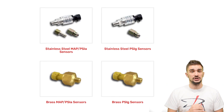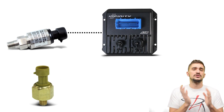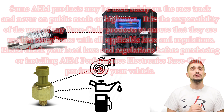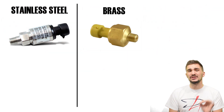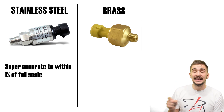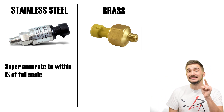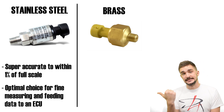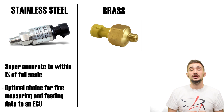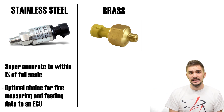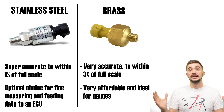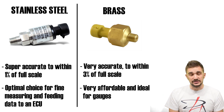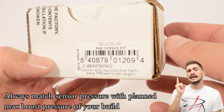AEM has a broad range of sensors for measuring manifold absolute pressure and feeding data to your ECU, as well as gauge sensors for measuring boost pressure, oil pressure, and fuel pressure. AEM's pressure sensors come in two different materials: stainless steel and brass. Stainless steel sensors are extremely accurate, with accuracy to within one percent of the full scale of the sensor — ideal for fine measurement and feeding data to your ECU. Brass sensors are accurate to within three percent of full scale, more economical, and offer the same wide range of maximum pressures as the stainless steel sensors.